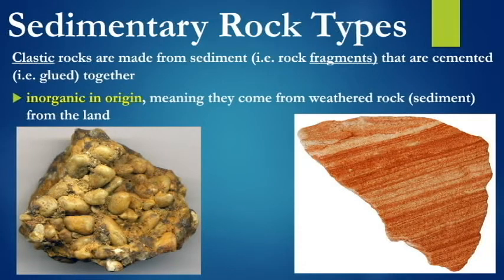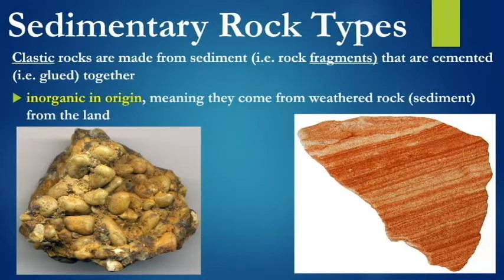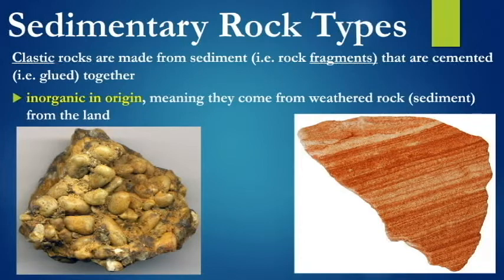These types of rocks are inorganic in origin, which means that they're coming from weathered rock from the land. A mountain like Mount Everest is built, and over millions and millions of years that rock weathers down. All that sediment gets deposited somewhere and is formed into a sedimentary rock. It's inorganic, meaning it's coming from something that was never alive.